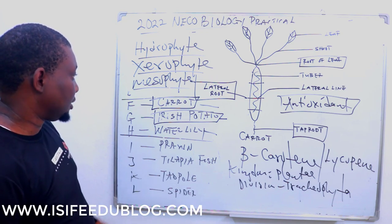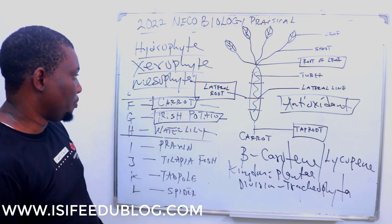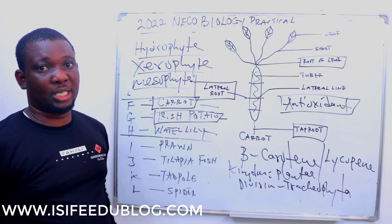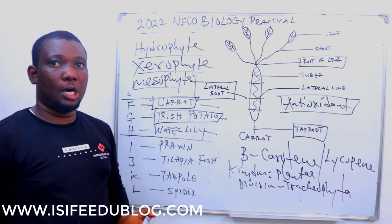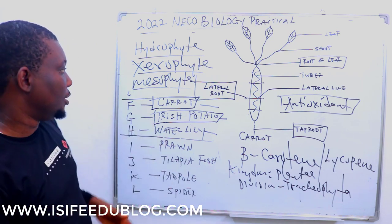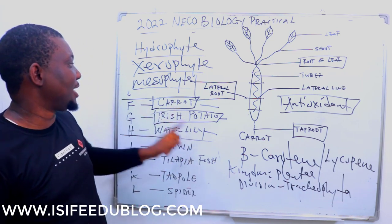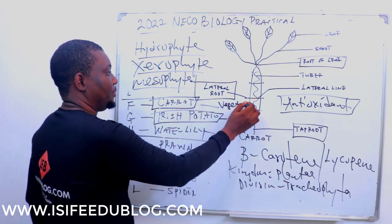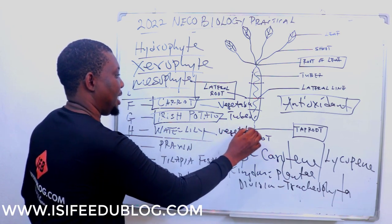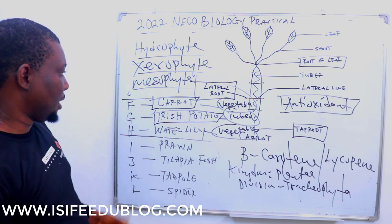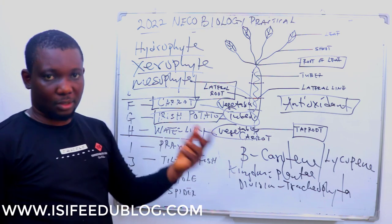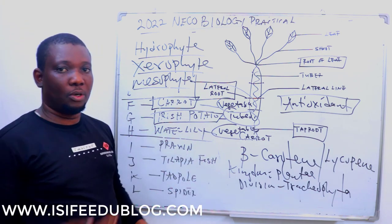In terms of economic importance, specimens F and G are important because they are food crops — both carrot and Irish potato. Water lily is also a food crop and can be classified alongside water lettuce and watermelon as vegetables. Carrot and Irish potato are classified as tubers. The food class you obtain from carrot is vitamins, from Irish potato is carbohydrates, and from water lily and other hydrophytic plants you obtain roughage. Water lily, watermelon, and water lettuce all come under specimen H's category.